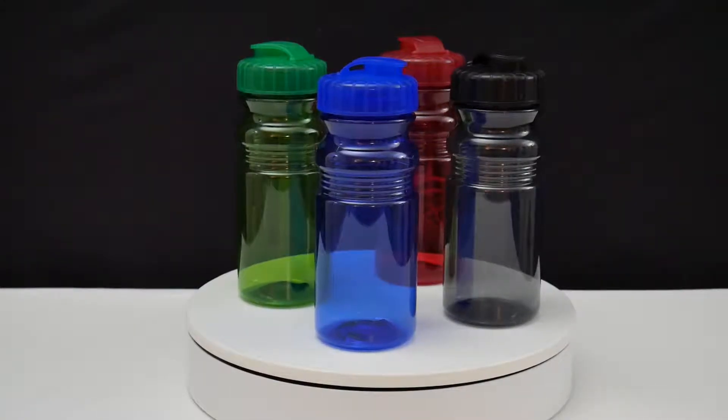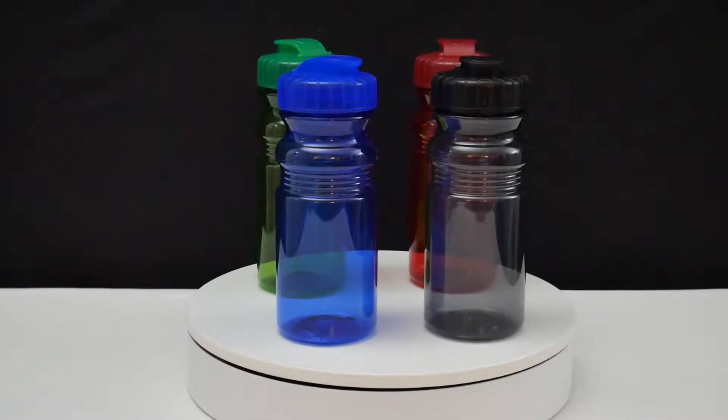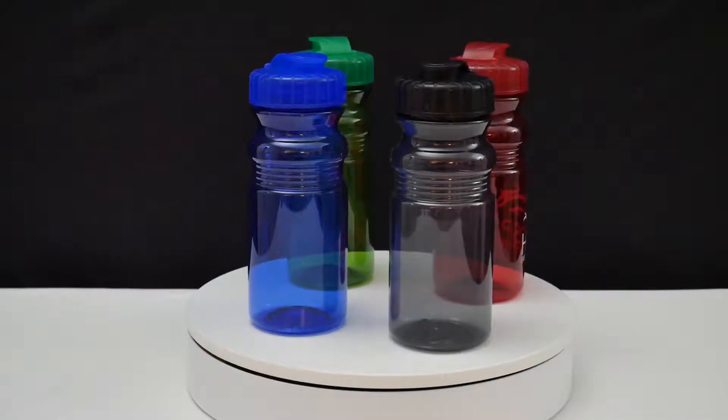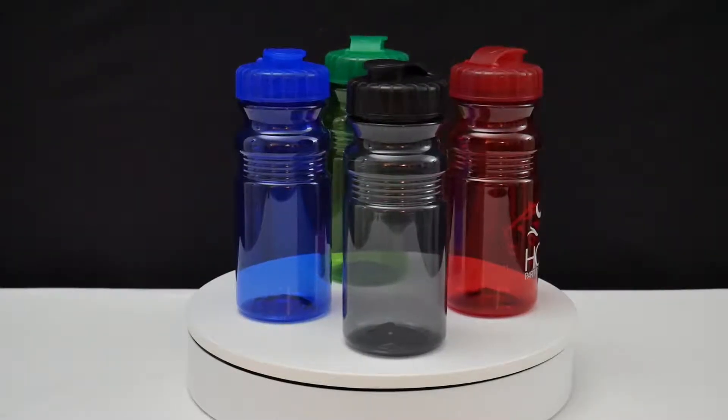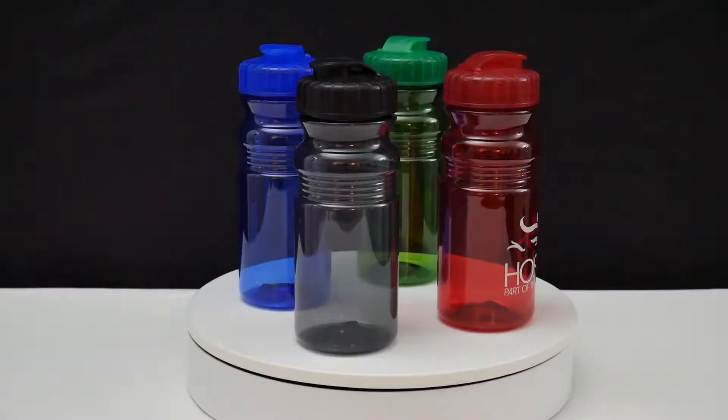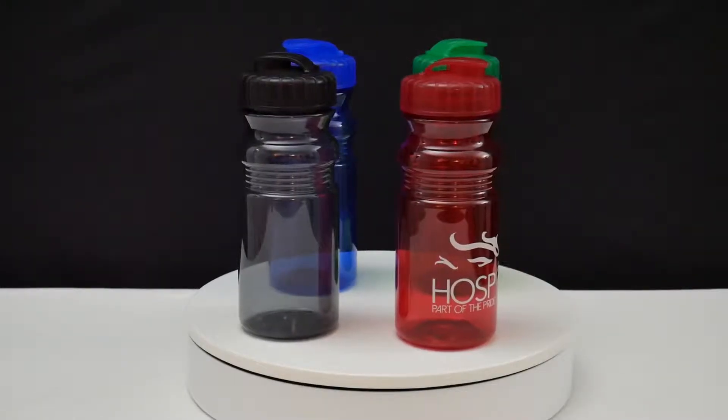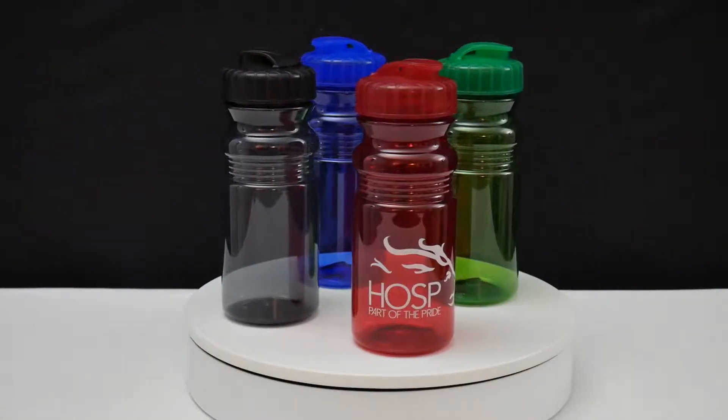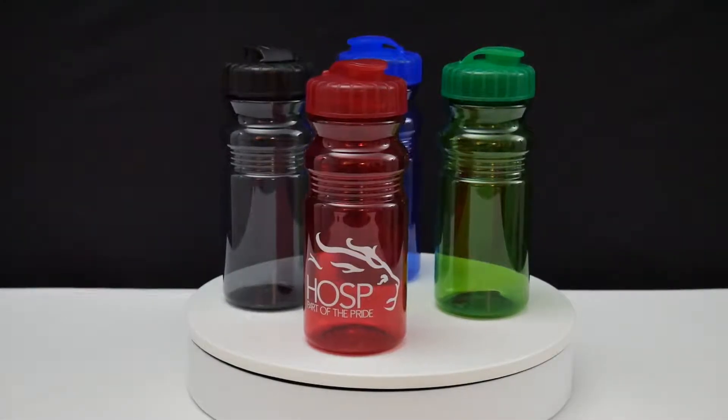These fitness bottles are translucent and are available in blue, green, red, and charcoal. They can accept a 3-inch wide by 2.5-inch high custom logo. Your custom logo will appear on these fitness bottles in a one-color silkscreen imprint.